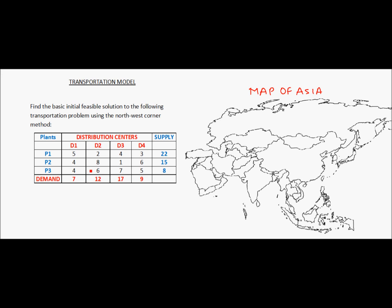At the same time, the plants cannot exceed their supply capacity. We have also been given the cost of shipping one unit of material from each plant to each of the distribution centers. The numbers in black represent the unit cost of shipment, and the company is looking to find which plants should transport material to which distribution centers such that the demand and supply constraints are met and the overall transportation cost is minimized.